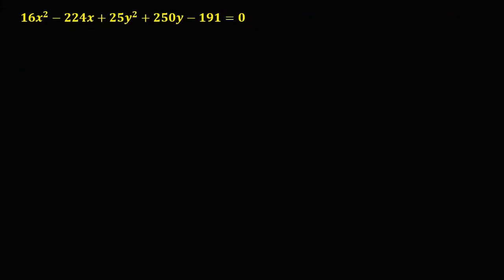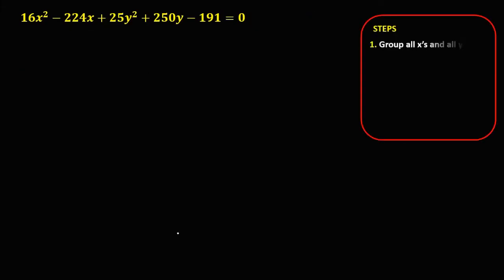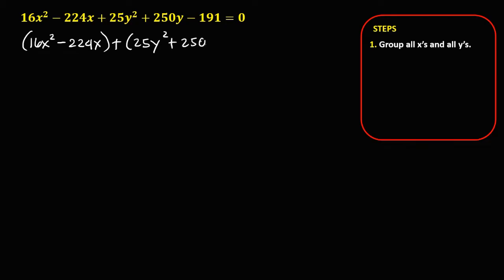From the given equation, we first need to group all x and all y terms. We have 16x squared minus 224x, then 25y squared plus 250y, then equals. We need to transpose negative 191 to the right side, so it becomes positive 191.